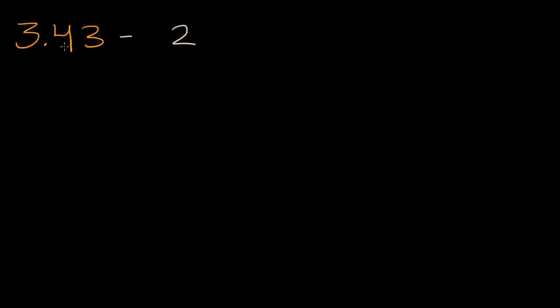Well, it might jump out at you that this is the same thing as three plus forty three hundredths minus two. And so you could just look at the ones. You could look at the wholes. We have three wholes and we're going to take away two of them. So we're going to be left with one whole. And we still have this forty three hundredths. So it's going to be one and forty three hundredths. Or we could write that as one point four three. So that one maybe was a little bit more straightforward.